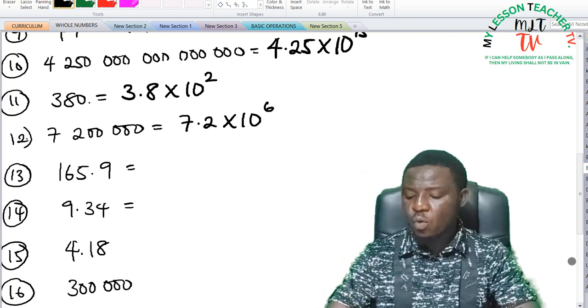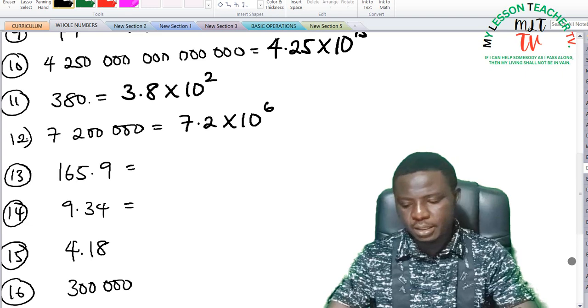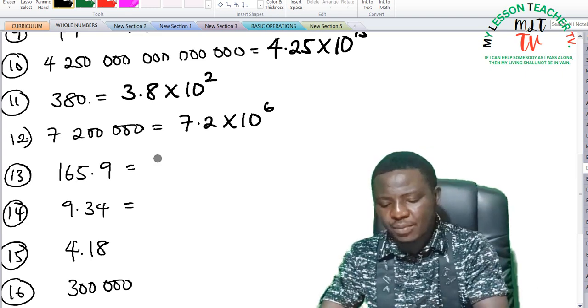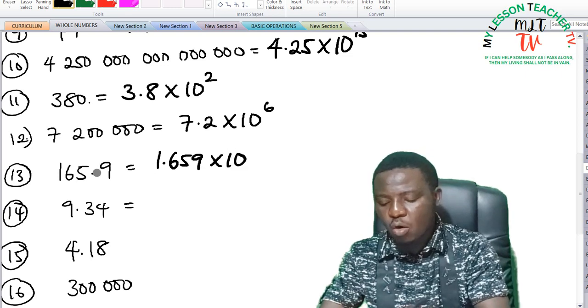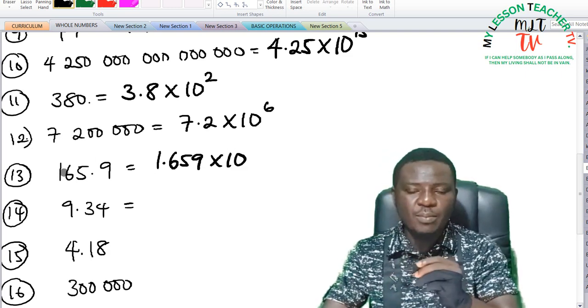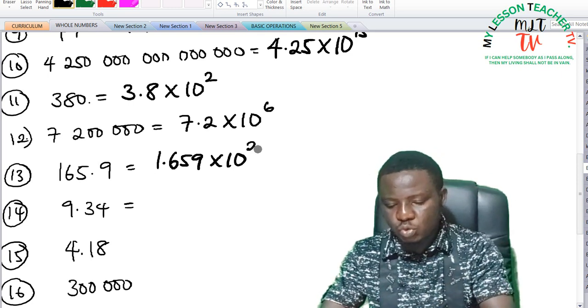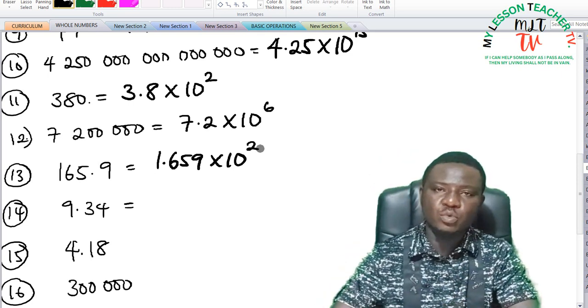Number 13, we have 165.9. 165.9 can be expressed as 1.659 times 10 raised to the power of the number of times the decimal point is moved, which is 2. So this is times 10 raised to the power of 2.